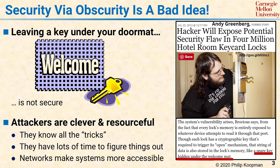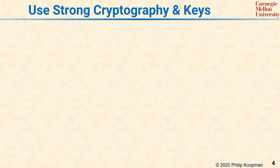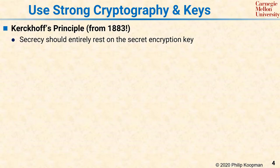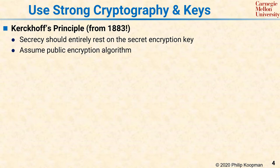Beyond just avoiding obscurity, good security usually ends up relying upon strong cryptographic algorithms and strong cryptographic keys. Kirchhoff's principle from 1883 holds that security should entirely rest on the secret encryption key and not on anything else. In fact, a cryptographic system should be completely secure even if everything about it is made public, including all the source code. The only thing that should need to be kept a secret is the particular secret key value used for a particular system. Even very complicated secret algorithms can be broken just by looking at encrypted messages without ever seeing the original algorithm.